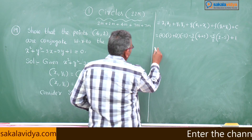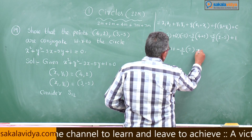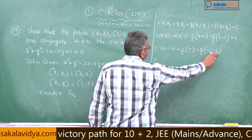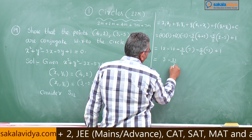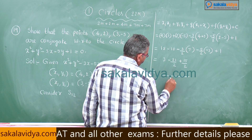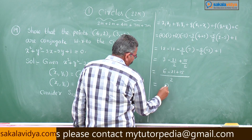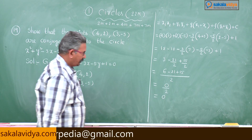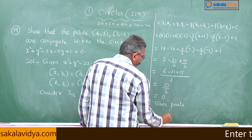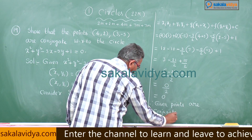Simplifying: 12 - 10 - (3/2)(7) - (5/2)(-6) + 1 = 2 + 1 - 21/2 + 15/2 = 3 + (-21 + 15)/2 = (6 - 21 + 15)/2 = 0/2 = 0. Therefore, the given points are conjugate with respect to the circle.